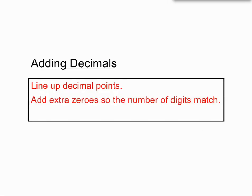And we line up the decimal points. We add extra zeros if we need to to help everything line up. And the decimal point in our answer just goes straight underneath the decimal points that have happened in our question.